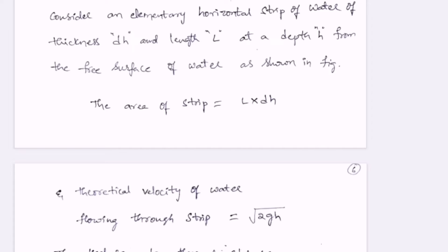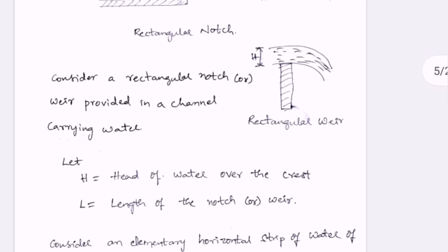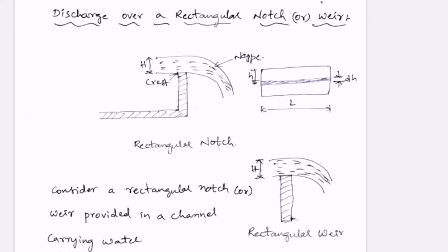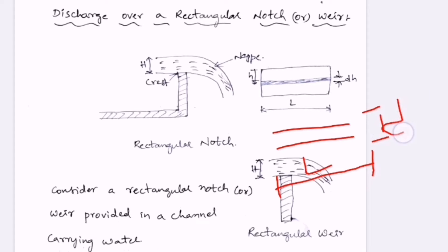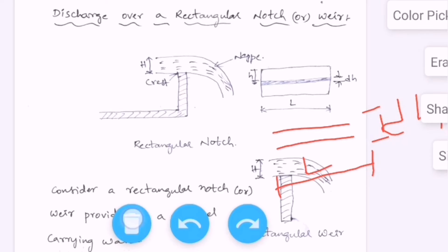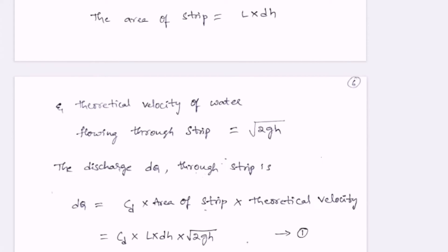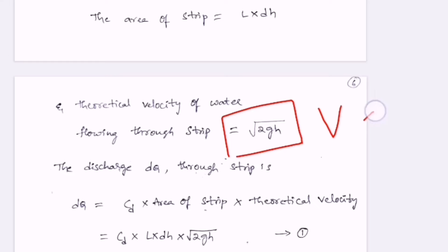The area of the strip will be L into dH. Looking at this figure, the shaded elementary strip has length L and thickness dH, so the area is L into dH. The theoretical velocity of water flowing through the strip is given by the formula derived from Bernoulli's equation: V is equal to under root 2gH.